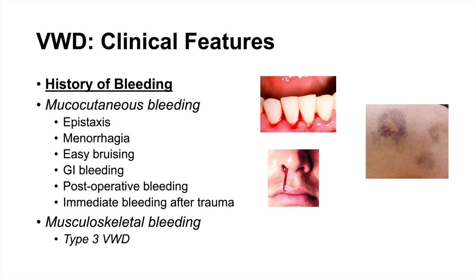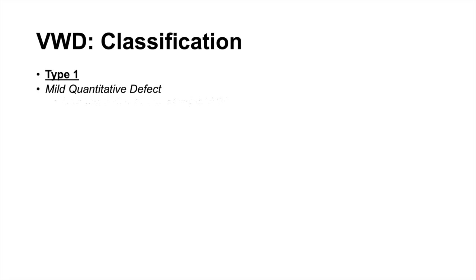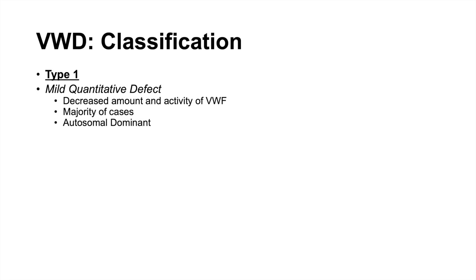Most bleeding is mucocutaneous, but with type 3 von Willebrand disease — the more severe case — we see musculoskeletal bleeding. We classify the disease into three types. Type 1 is a mild quantitative defect with a decreased amount and activity of von Willebrand factor. About 80% of cases fall within type 1, and it follows autosomal dominant inheritance — often running through families.